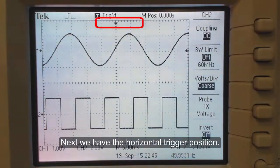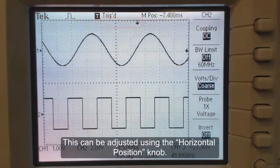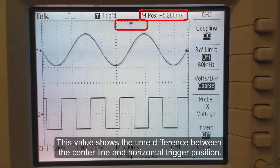Next we have the horizontal trigger position. This can be adjusted using the horizontal position knob. This value shows the time difference between the center line and the horizontal trigger position.